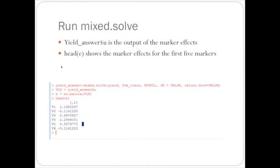And this just shows the head command for the e marker matrix. And so these are the marker effects for individuals from the validation population.